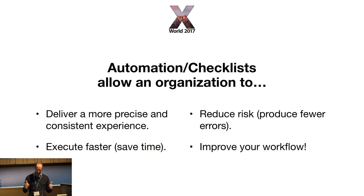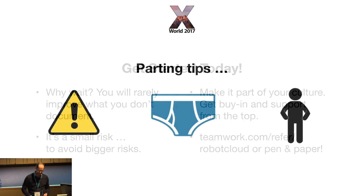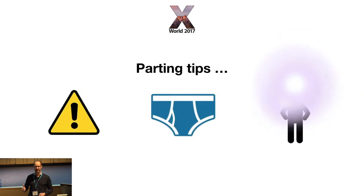Automation and checklists allow an organization to operate consistently and at scale. And remember — don't be Mr. Poopyhead. Thanks.